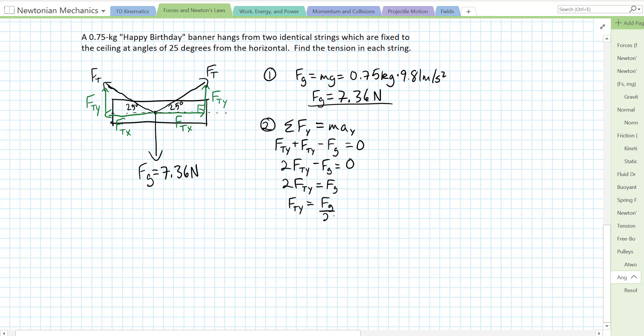If we wanted we could plug in numbers. So 2Fty is equal to the force of gravity, or each of our individual y components of tension is equal to the force of gravity over 2. Now all that's saying is, since there's no acceleration, the total of these two y components is equal to the force of gravity, so each one is half of the force of gravity. So let's solve it: 7.36 Newtons over 2.